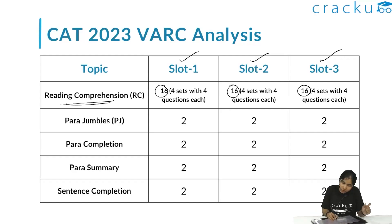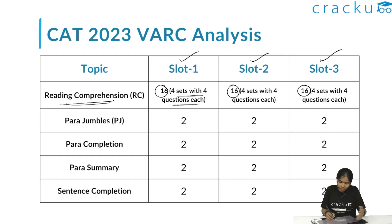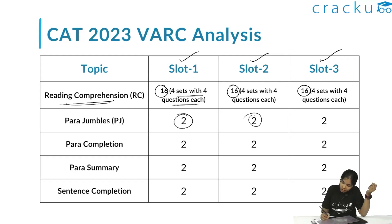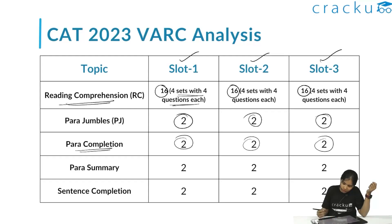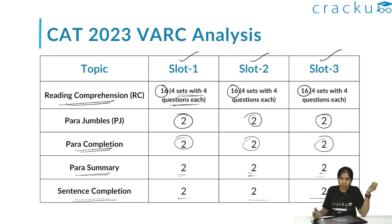Coming to para-jumbles, in CAT 2023 they asked two para-jumble questions in slot 1, slot 2, and slot 3. The same was the case with para-completion — two questions in each slot. For para-summary, they tested two questions in each slot, and two questions from sentence correction as well.